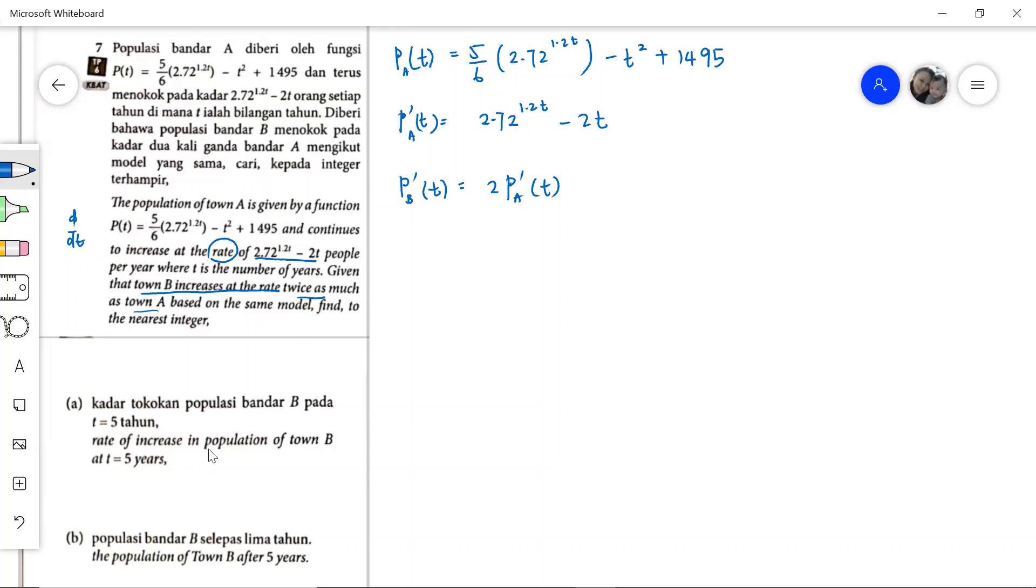We need to find the rate of increase in population of town B at T equals 5. So we put 2 into the rate of increase formula. It will be 2.72 raised to the power of 1.2T minus 2T. We want to find T equals 5, so substitute that in. 1.2 times 5 is 6, minus 2 times 5 is 10.